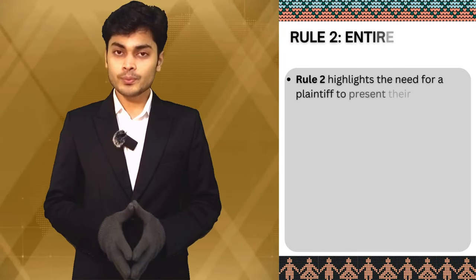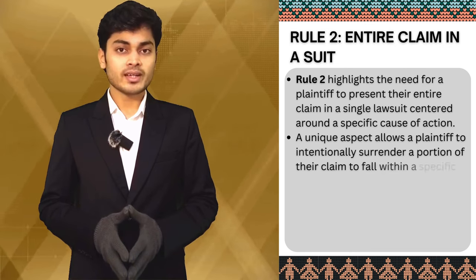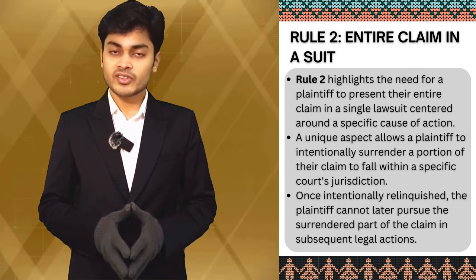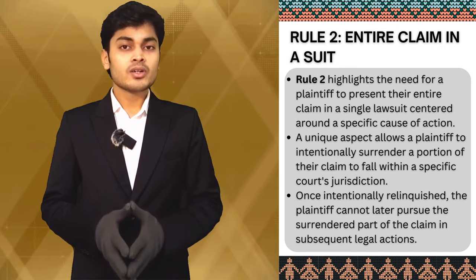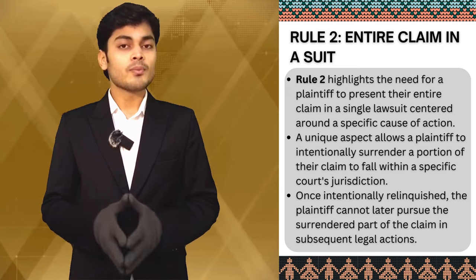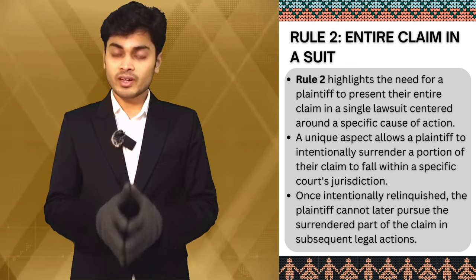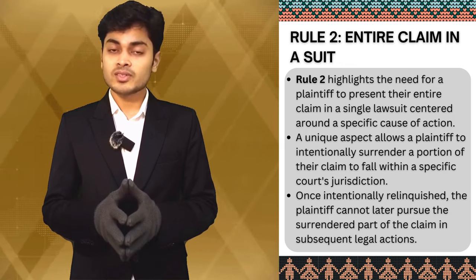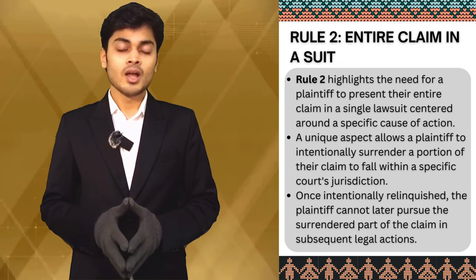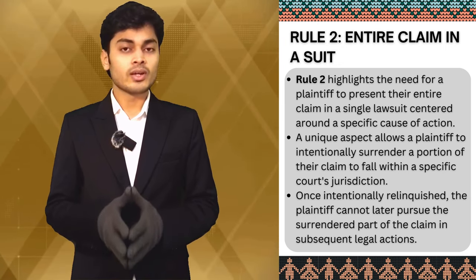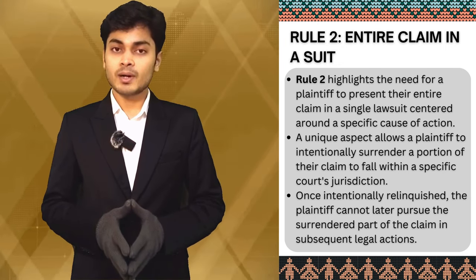Moving on to Rule 2, it emphasizes that the plaintiff must include the entire claim in one suit related to a specific cause of action. But there is an interesting twist here. The plaintiff can give up or relinquish a part of the claim intentionally to bring the suit to a particular court's jurisdiction. However, once you have let go intentionally, you cannot come back later seeking that part of the claim.